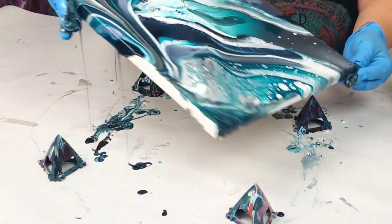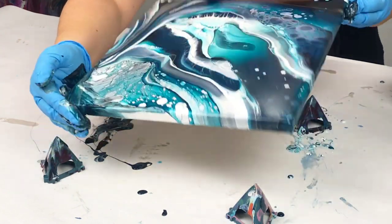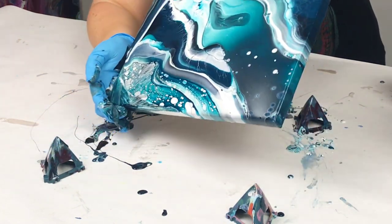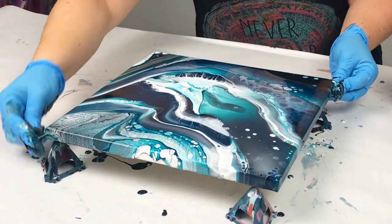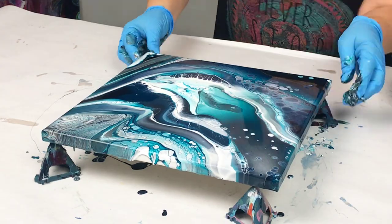Also, this paint that goes onto the table, you can reuse that. You can save it by putting it into a cup and use it later, or you can let it dry and make other projects out of it. I've got a lot of videos on that.